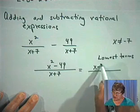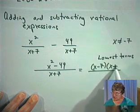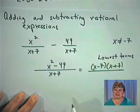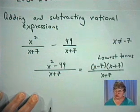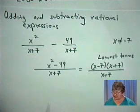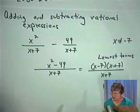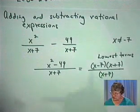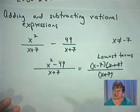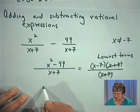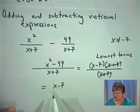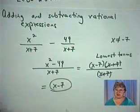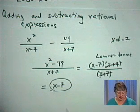Well, the numerator is the difference of two squares, and so that will factor as x minus 7 times x plus 7. The denominator is already as well as we can factor it. It's just x plus 7 there. So now we'll look for common factors. We know that we have an x plus 7 in both the numerator and denominator. So this subtraction problem of rational expressions just simply becomes x minus 7. So that was pretty easy.